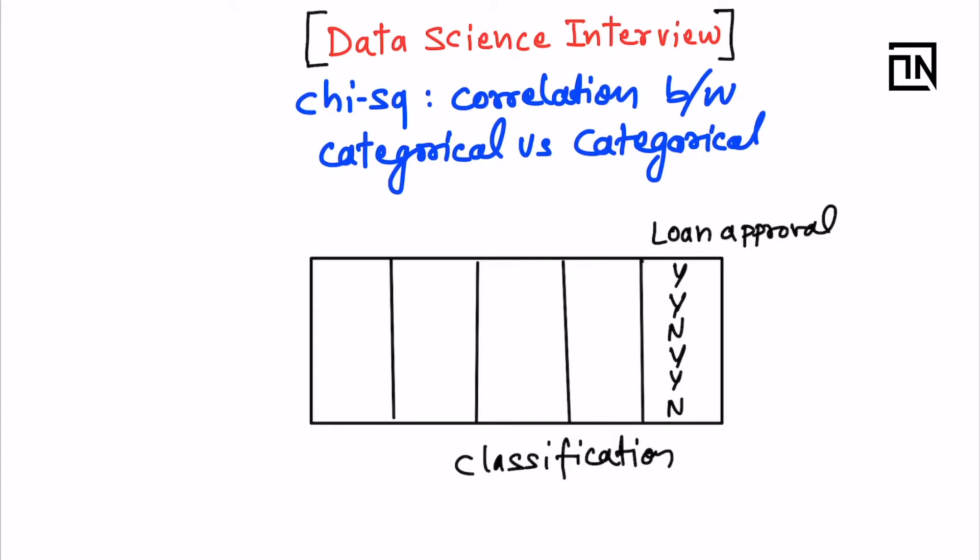In this video, I will help you understand about chi-square test — what it is and how it is utilized to judge the relationship between two categorical variables in machine learning. So let's get started.